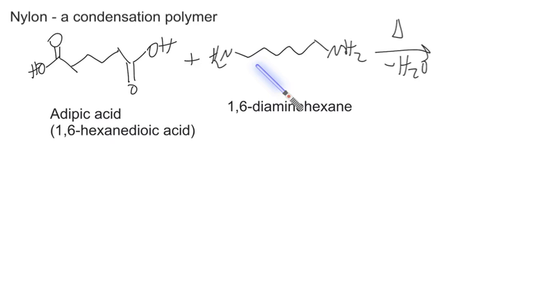Then we have 1,6-diaminohexane, so one, two, three, four, five, six carbons with an amine at each end. Now we're going to heat it, remove water, and that's going to cause an amide to form between the amine and the carboxylic acid.